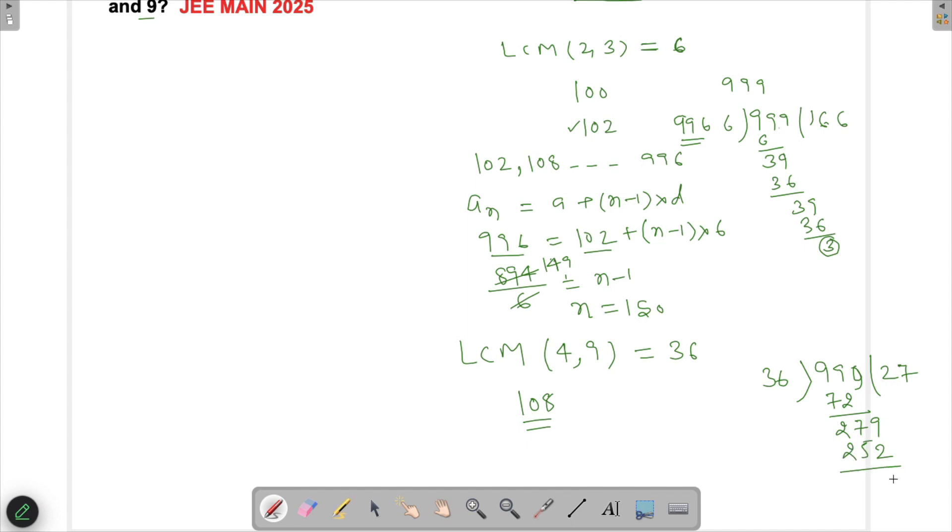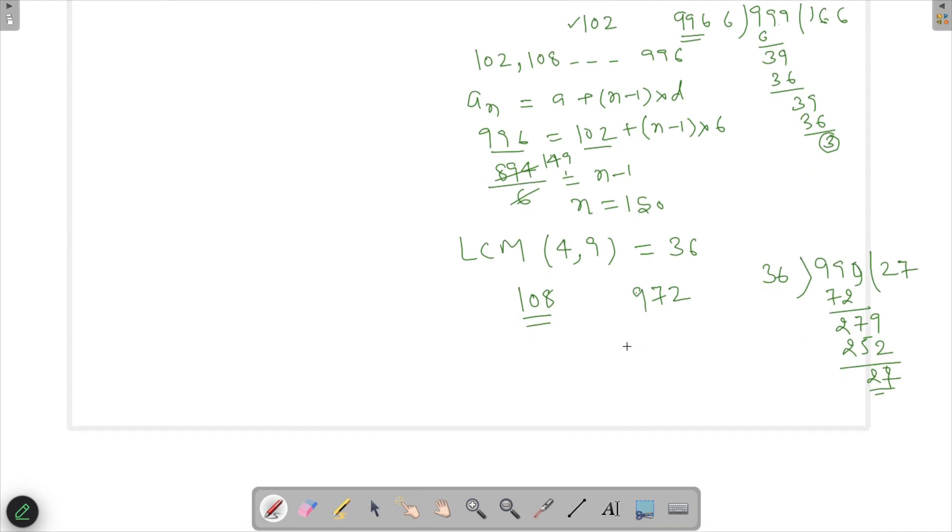So what I get is 9 minus 2 is 7, and then 57 minus 3. So if I subtract 27 from this then I get the largest number, so that will be 9 minus 7 is 2, 9 minus 2 is 7, so this is 972. So again this is an AP for which the first term is this and the last term is it. We'll find out the number of terms.